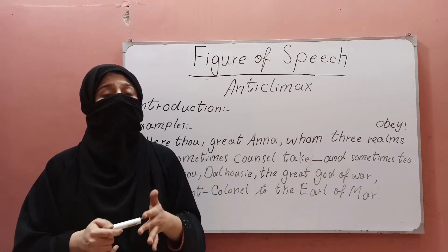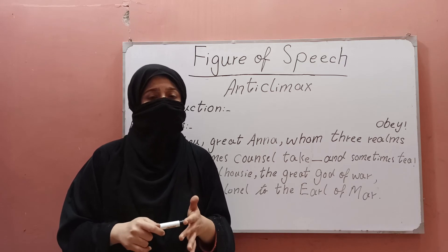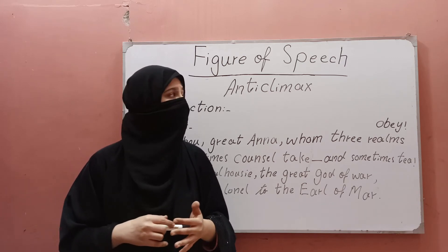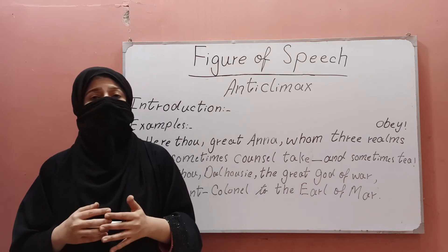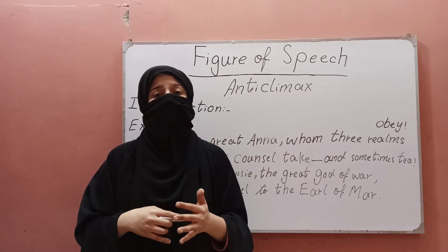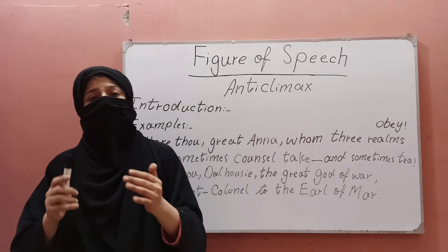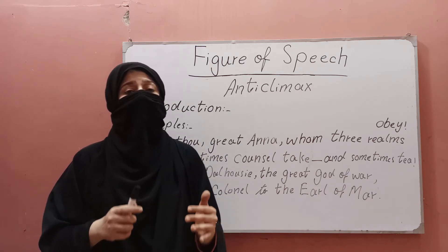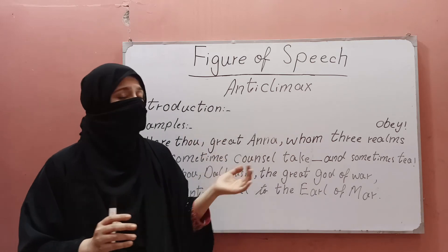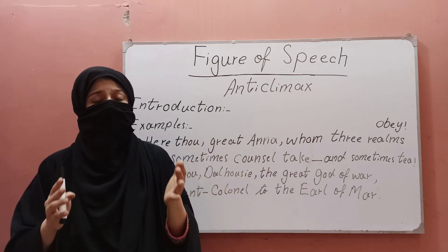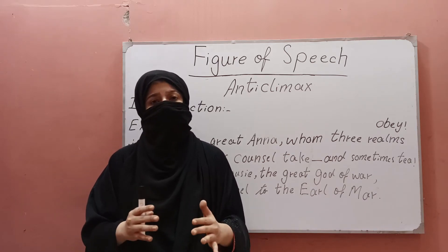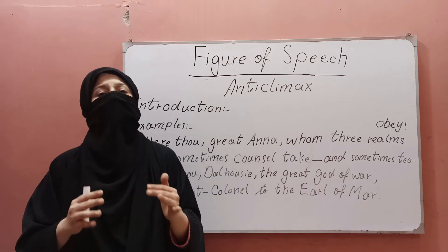Anticlimax is used for the purpose of satire and ridicule. In anticlimax, an arrangement is made in such a way that unimportant things appear at the point where more serious detail should be found. It is an unexpected twist in the story which usually appears at the end.